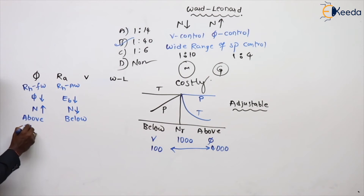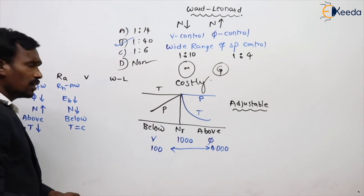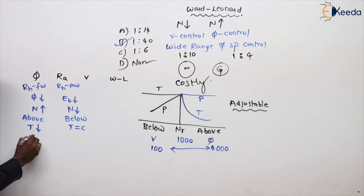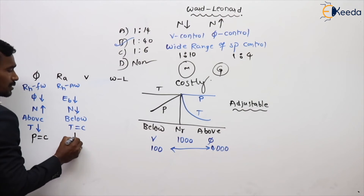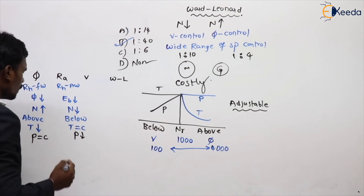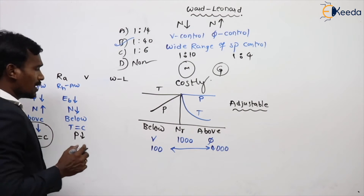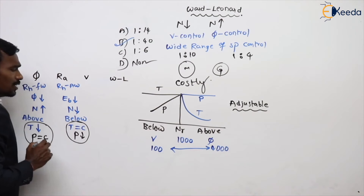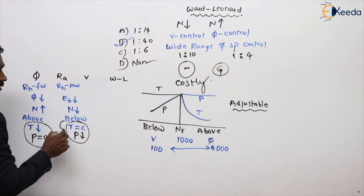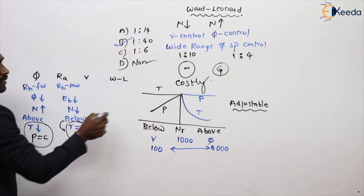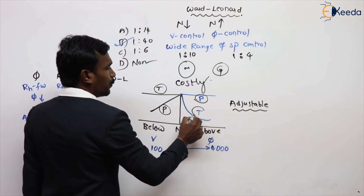In flux control, the torque is reducing while speed increases, so power is constant — constant power variable torque drive. In armature resistance control, torque is constant but when speed reduces, power also reduces — constant torque variable power drive. So, below rated speeds are constant torque variable power drive, and above rated speeds are constant power variable torque drive.